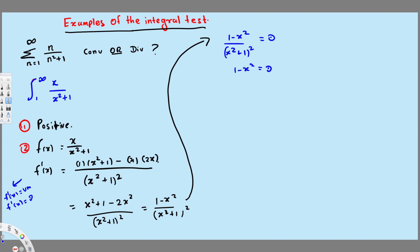So the critical points are x = ±1, but we don't care about the negative one because the interval goes from 1 to infinity. We just have to check what happens after x = 1. If we plug in x = 2 into the derivative, we get 1 minus 4, which is negative, and the denominator is always positive since it's squared. So anything above 1 gives a negative derivative — the function is decreasing. Since it's positive and decreasing, we can go ahead and use the integral test.